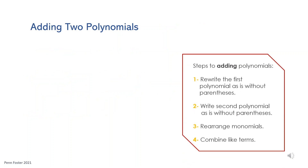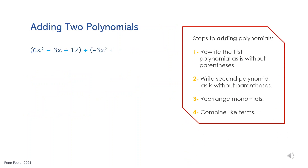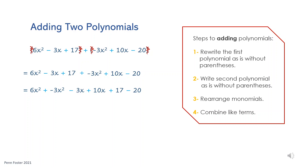To add two polynomials, simply cross out the two sets of parentheses and rewrite the given polynomials. Next, rearrange the monomials into like groups as before. Start from the left — simplify the first group, it's 3x squared. Combine the second group, it's 7x. Finally, subtract 17 minus 20, it's negative 3. The simplified polynomial is 3x squared plus 7x minus 3.